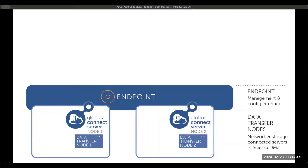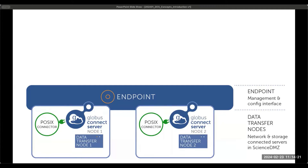Globus supports a variety of storage types, from POSIX to object stores to tape archives. The way that is done is using a connector. By default, a POSIX connector is installed on the data transfer nodes, and it can be used for accessing any mounted file system.